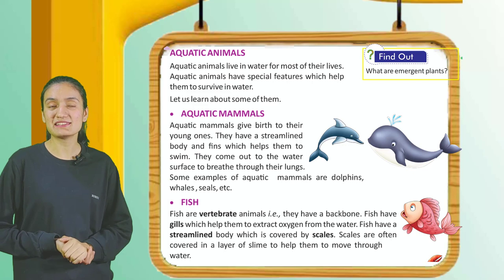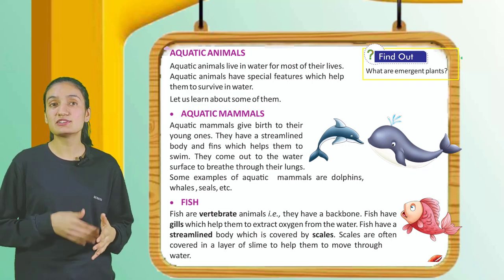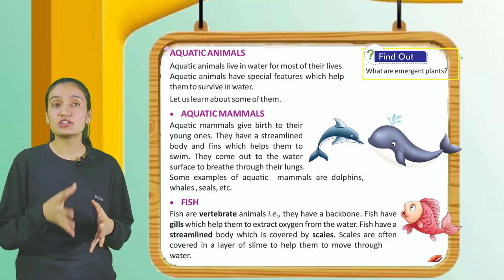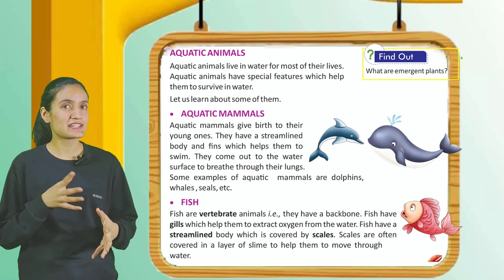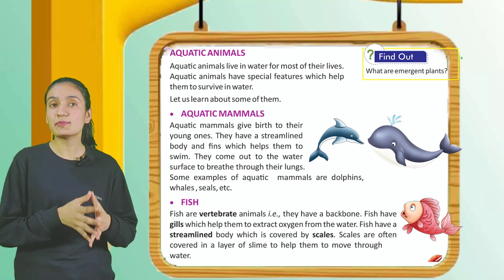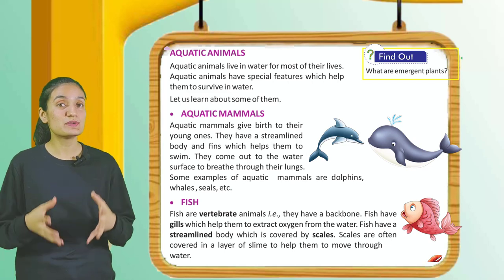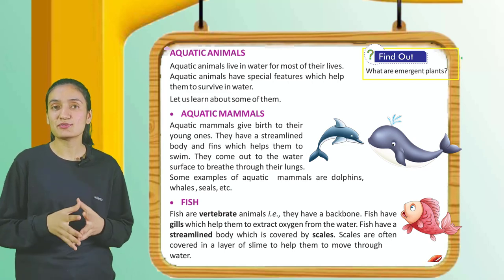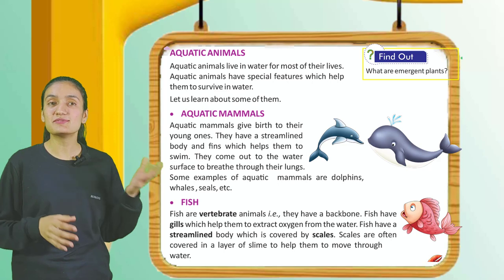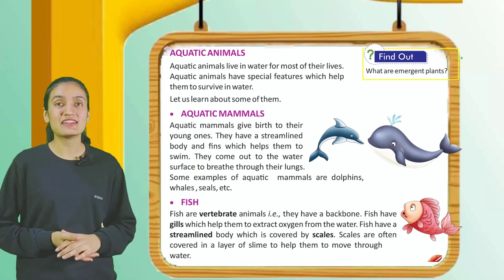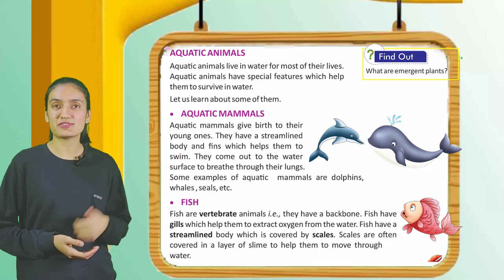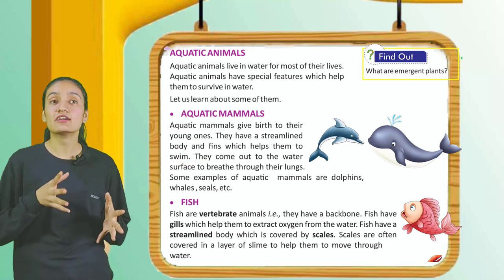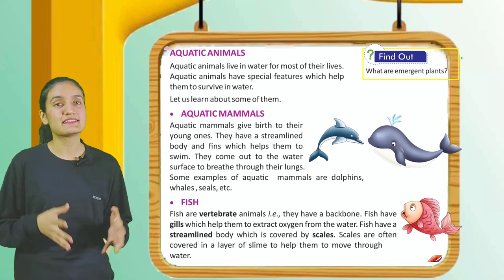Aquatic mammals: Aquatic mammals give birth to their young ones. They have a streamlined body and fins which help them to swim. They come out to the water surface to breathe through their lungs. Some examples of aquatic mammals are dolphins, whales, and seals.